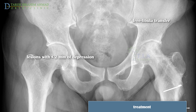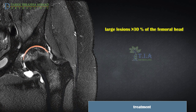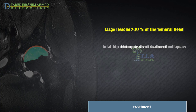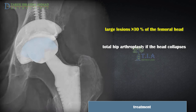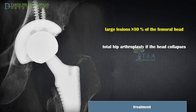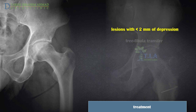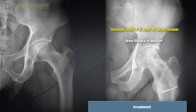Bone grafting is predominantly used to treat symptomatic patients with minimal collapse of the femoral head. For large lesions involving greater than 30% of the femoral head that are pre-collapse, core decompression and grafting is not suggested, as 85% of patients with large lesions fail these procedures and are highly likely to progress to collapse requiring total hip arthroplasty. For symptomatic early lesions with less than 2mm of depression, vascularized or non-vascularized bone grafting may delay progression and reduce the need for future hip arthroplasty in some patients.